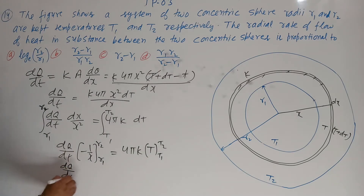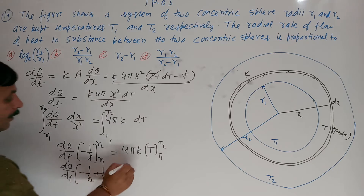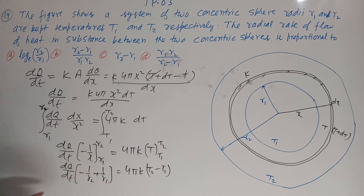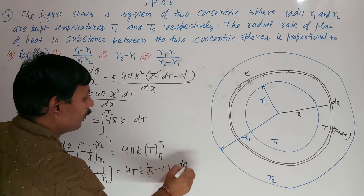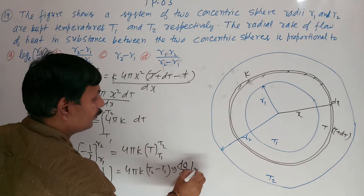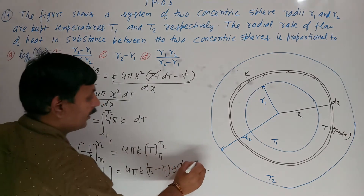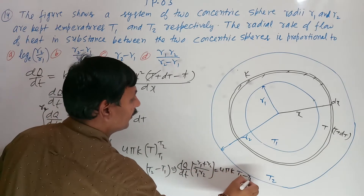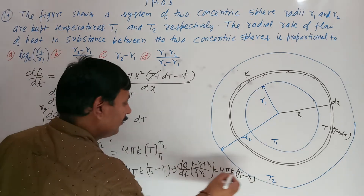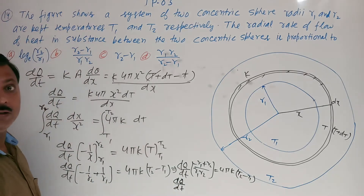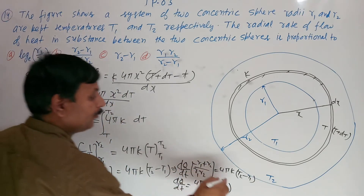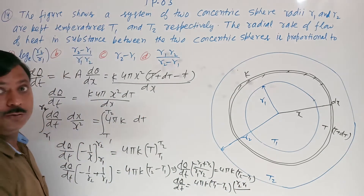Putting in the limits: DQ/DT times (−1/R2 + 1/R1) equals 4πK times (T2 − T1). Taking LCM, we get DQ/DT times (R2 − R1)/(R1·R2) equals 4πK(T2 − T1). Rearranging with T1 − T2 sign convention gives R2 minus R1 in denominator, so DQ/DT equals 4πK(T1 − T2) times R1·R2 divided by (R2 − R1).